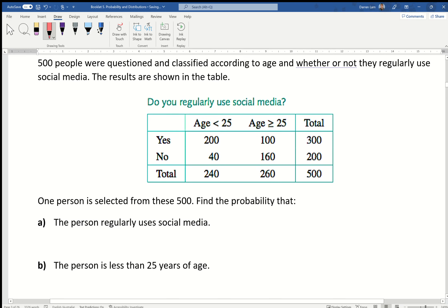Find the probability that the person regularly uses social media. The probability is the number of outcomes divided by the total number of possibilities. In this situation, regularly uses social media doesn't say anything about age, so we're going to focus purely on yes or no. In this case, focusing on yes, 300. Why is that wrong? Probability, not number of people. So the probability would be over the total, which is 500, which you can write as 3 over 5 or 0.6. Both are valid.